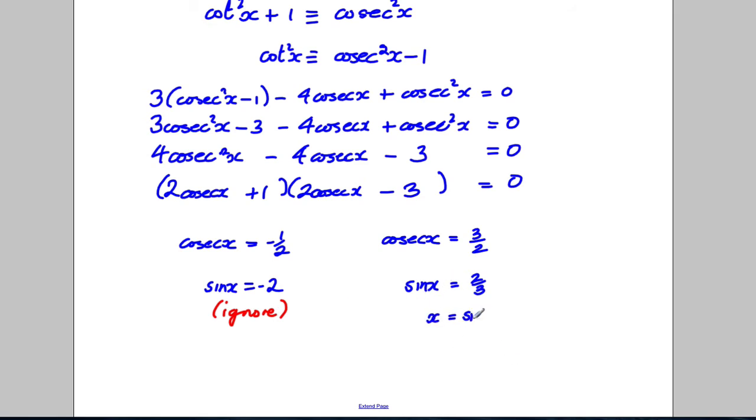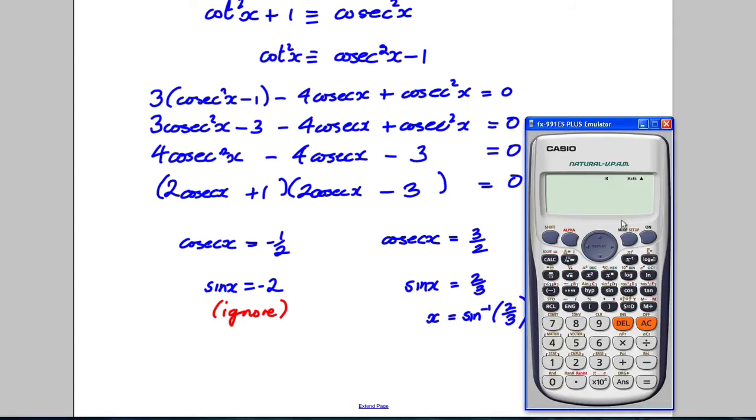X is equal to the inverse sine of 2 thirds. Calculator out. Make sure it's in radians mode for this. Change your mode to radians, number 4 for radians. Make sure it's got radians there. And what we're going to do is go inverse sine of 2 thirds. And we get the answer, 0.7297. To 3 significant figures, I would write this as 0.730.